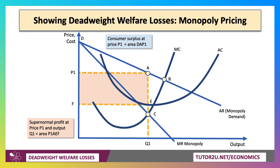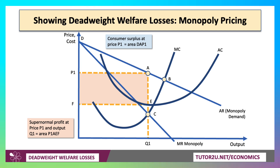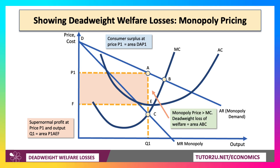For monopoly, a fairly standard monopoly diagram: the profit-maximising monopolist prices at P1 with output Q1, and the shaded area shows the monopoly supernormal profits. But had the market priced at marginal cost, we would have had a bigger output and a lower price. So the deadweight loss of welfare is the area ABC.